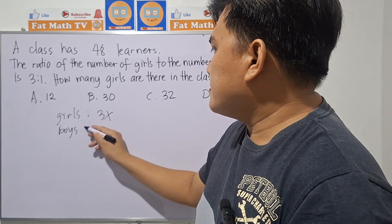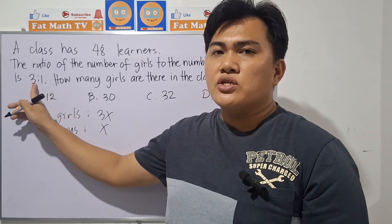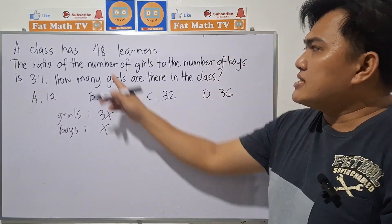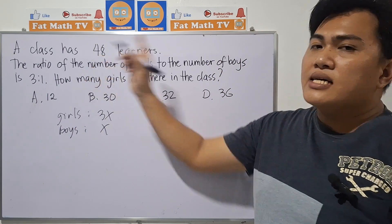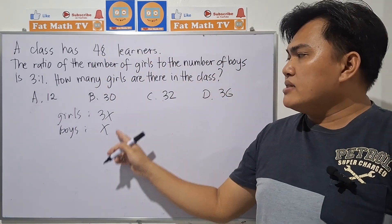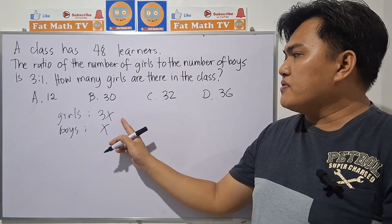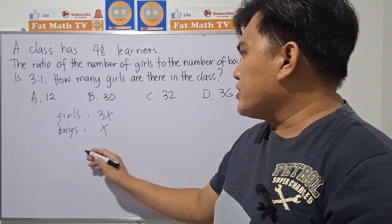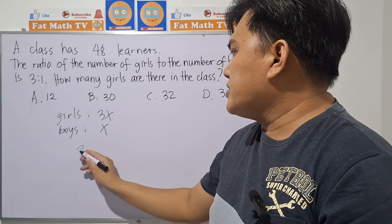Since the ratio is 3 to 1, it says that the class has 48 learners, meaning to say the total of the number of girls and the number of boys is 48. That means our equation is going to be 3x plus x equals 48.